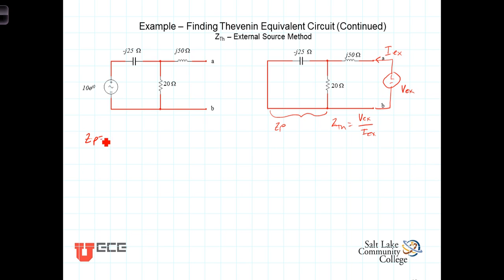Z parallel is equal to negative J25 times 20 divided by 20 minus J25, and that again works out to be 12.2 minus J9.76.